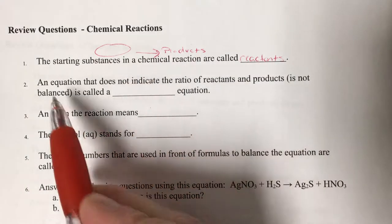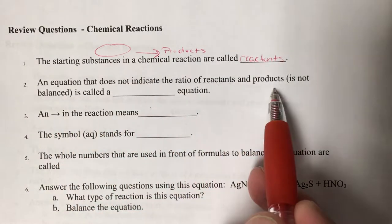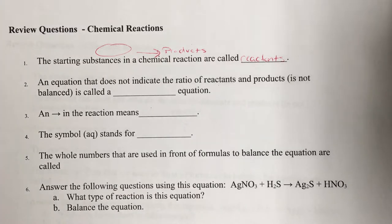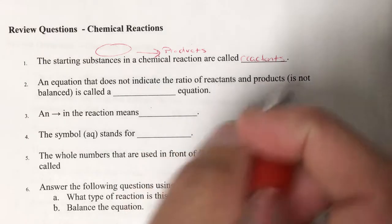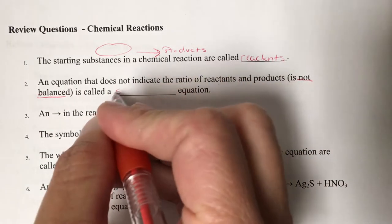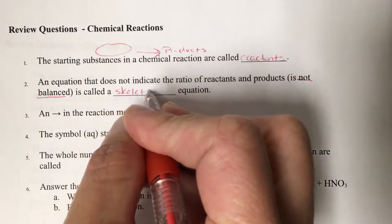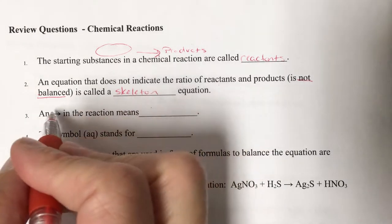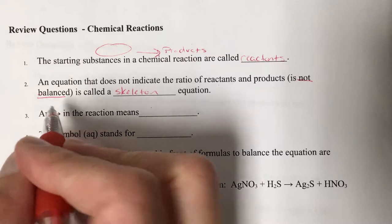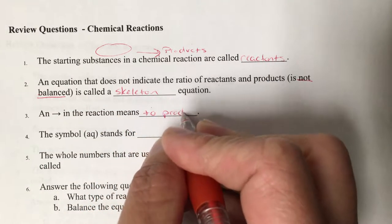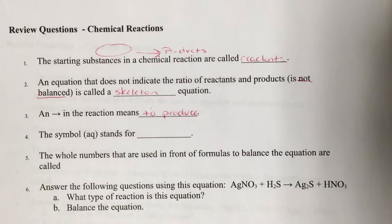Number two: an equation that does not indicate the ratio of reactants and products. It's a chemical equation — it has all the symbols and formulas, no words, but it's not balanced. That is a skeleton equation. The skeleton equation is the one before we balance it. The arrow in a reaction means 'to produce.'